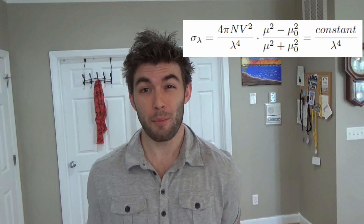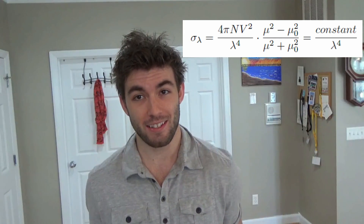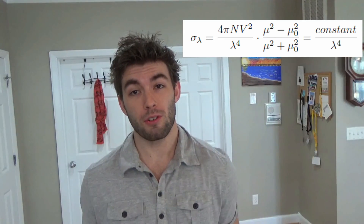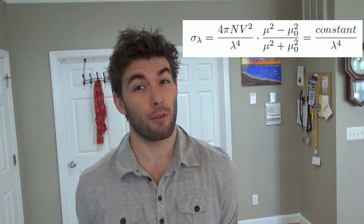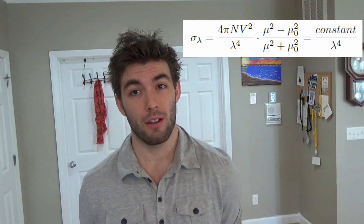Rayleigh has an equation showing how much scattering actually takes place — it's proportional to one over the wavelength to the fourth power. That means the smaller the wavelength, the larger the scattering. Since blue light has a much smaller wavelength than red light, it scatters way more.